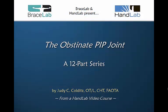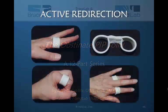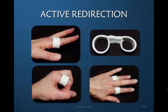If you'd like more information about active redirection, go to our course on the obstinate PIP joint, which shows the construction of these orthoses and talks about the rationale for gaining PIP joint extension and flexion specifically. These orthoses are easy to make out of a scrap of material and can be worn during daily activities so that repetition can be continued and the maladaptive pattern is never revisited.